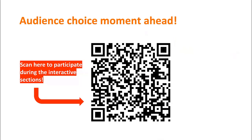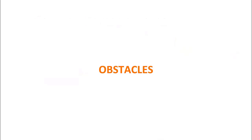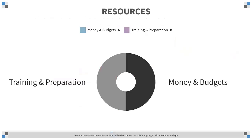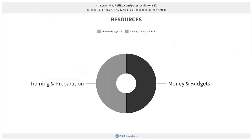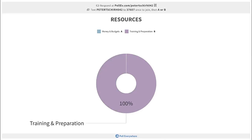We have another audience choice moment. You get to choose between two things: let's talk about resources. This sort of push does require a few extras, and you get to choose between what it looks like for training and preparation or what the financials look like. Training and preparation wins. As we were just saying, this puts a lot of strain on pretty much all parties involved—it's not something you prep six months in advance.